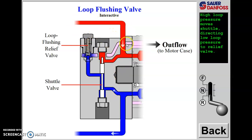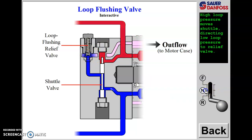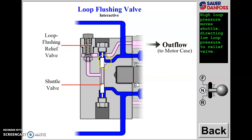In reverse, the top of the circuit becomes the high pressure side of the loop driving the motor in reverse. Return oil coming back from the motor can cross the shuttle valve and go to the flushing relief, which controls charge pressure in either forward or reverse. In neutral, the shuttle itself is centered, so no oil can connect to the loop flushing relief. The charge relief at the main charge pump then controls charge pressure at a slightly higher value than when operating forward or reverse.